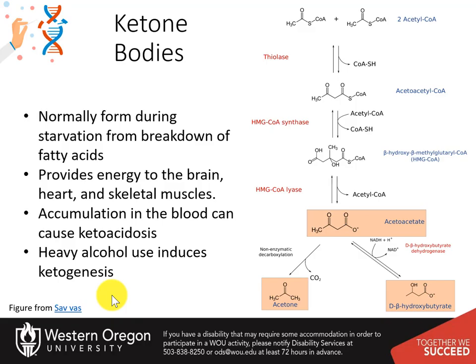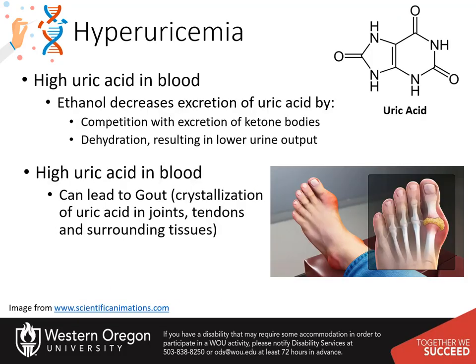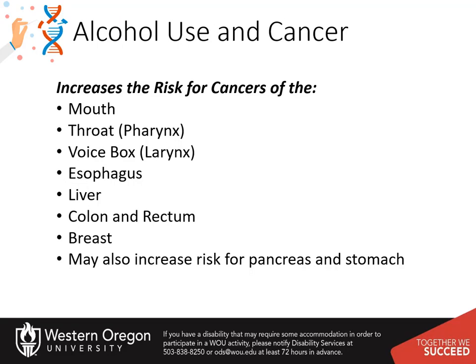In addition to starvation, heavy alcohol consumption can induce ketogenesis inappropriately. High levels of lactate and ketone bodies within the bloodstream can result in dehydration and reduced excretion of uric acid, leading to hyperuricemia. Over time, high uric acid levels can cause uric acid to precipitate, especially in joints, where it causes painful gout flare-ups.